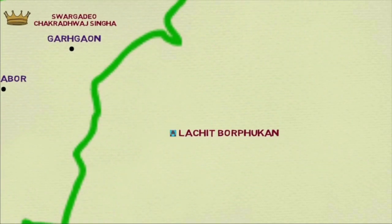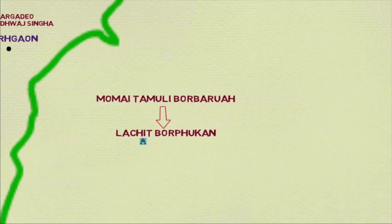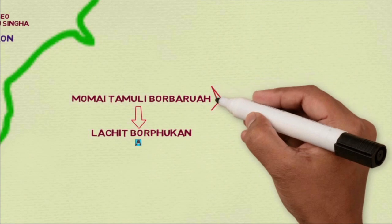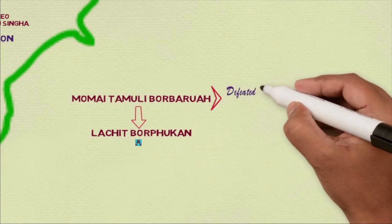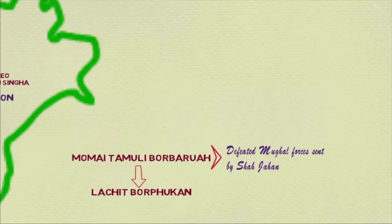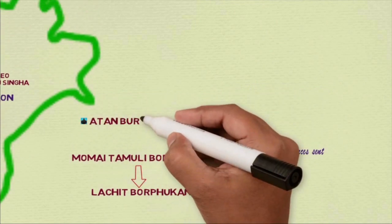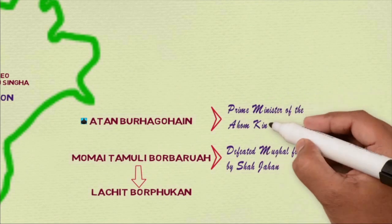Lachit Borphukan was the son of Mumai Tamuli Borbarua. Mumai Tamuli Borbarua had risen from being a bonded servant to the post of Borbarua, one of the top five ministers or Patra Mantris of the Ahom court. Mumai Tamuli had successfully fought and defeated the Mughal forces sent by Emperor Shah Jahan to invade Assam. So Lachit wasn't really lacking in bloodline either. The highest-ranking minister in Assam at that time, Aton Buraguhain, also took active part in the campaign against the Mughals.